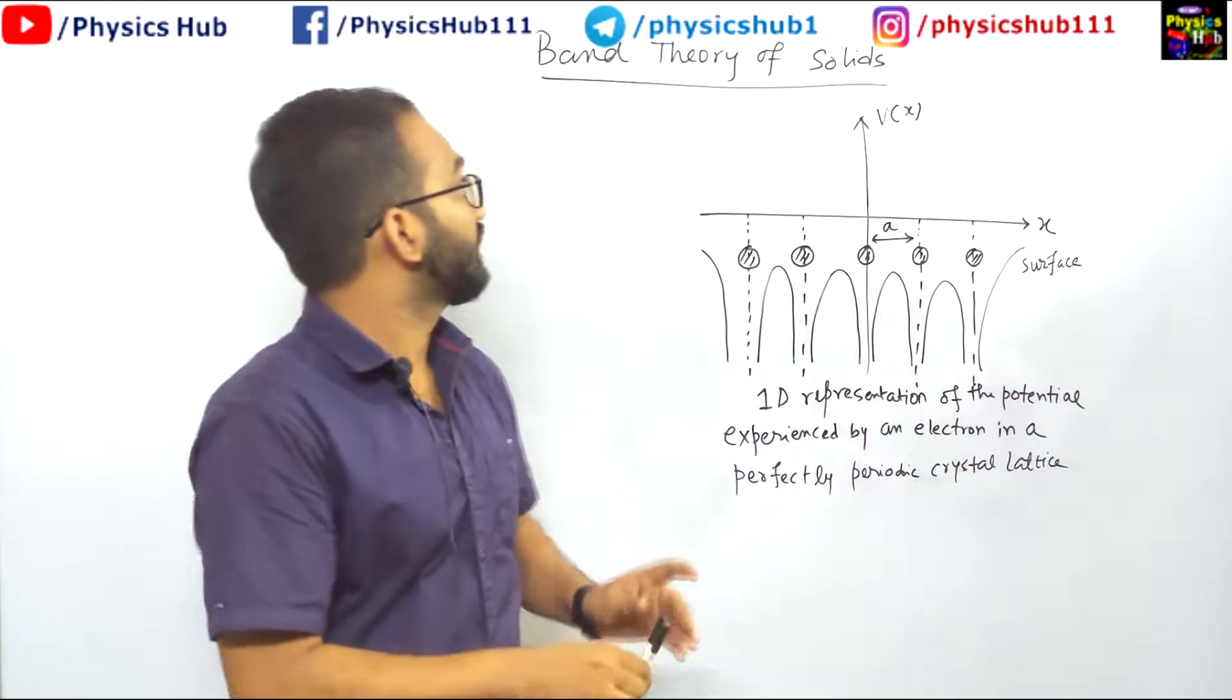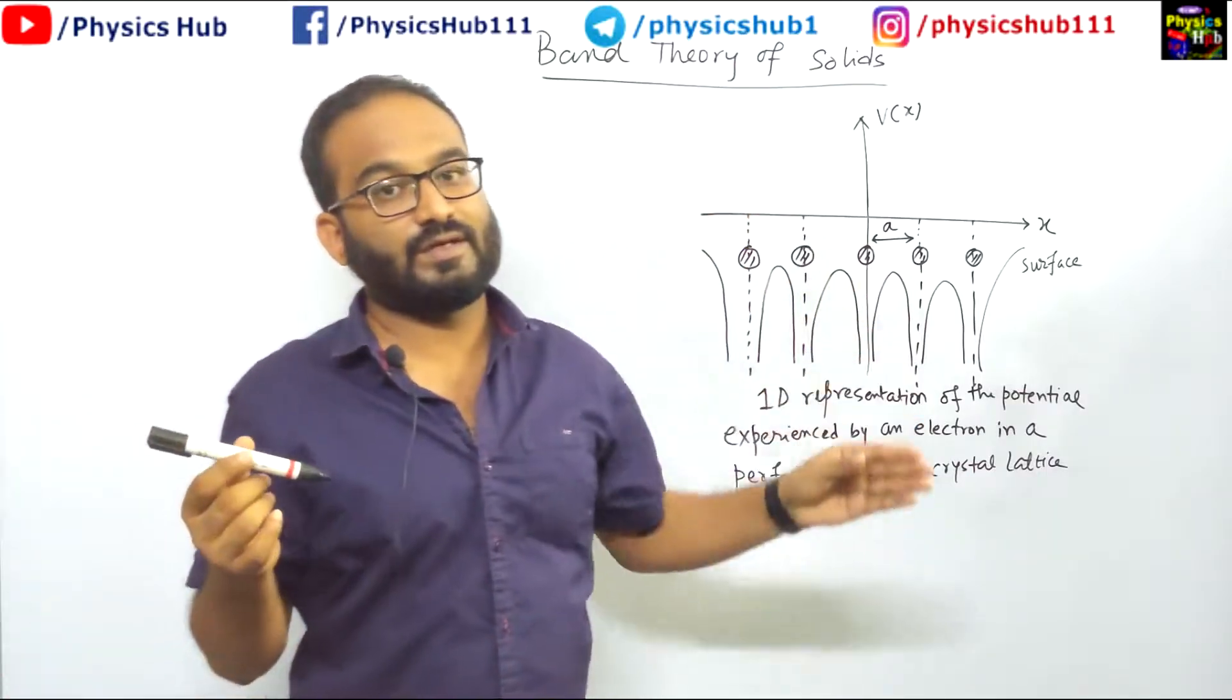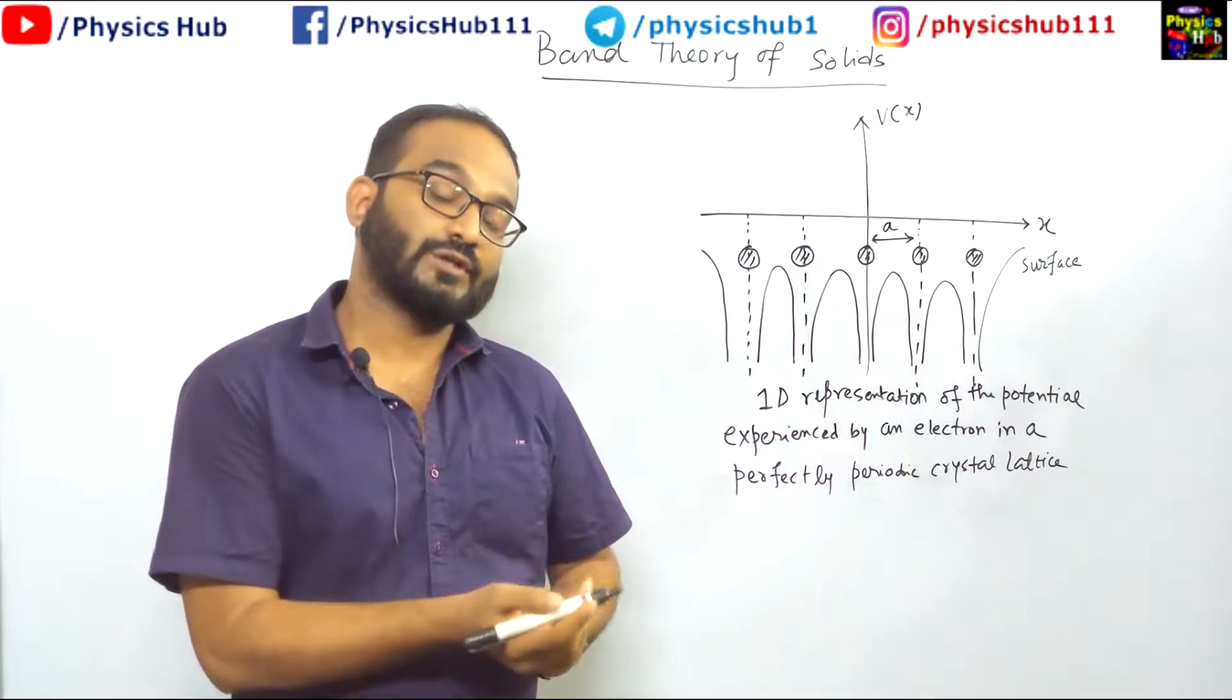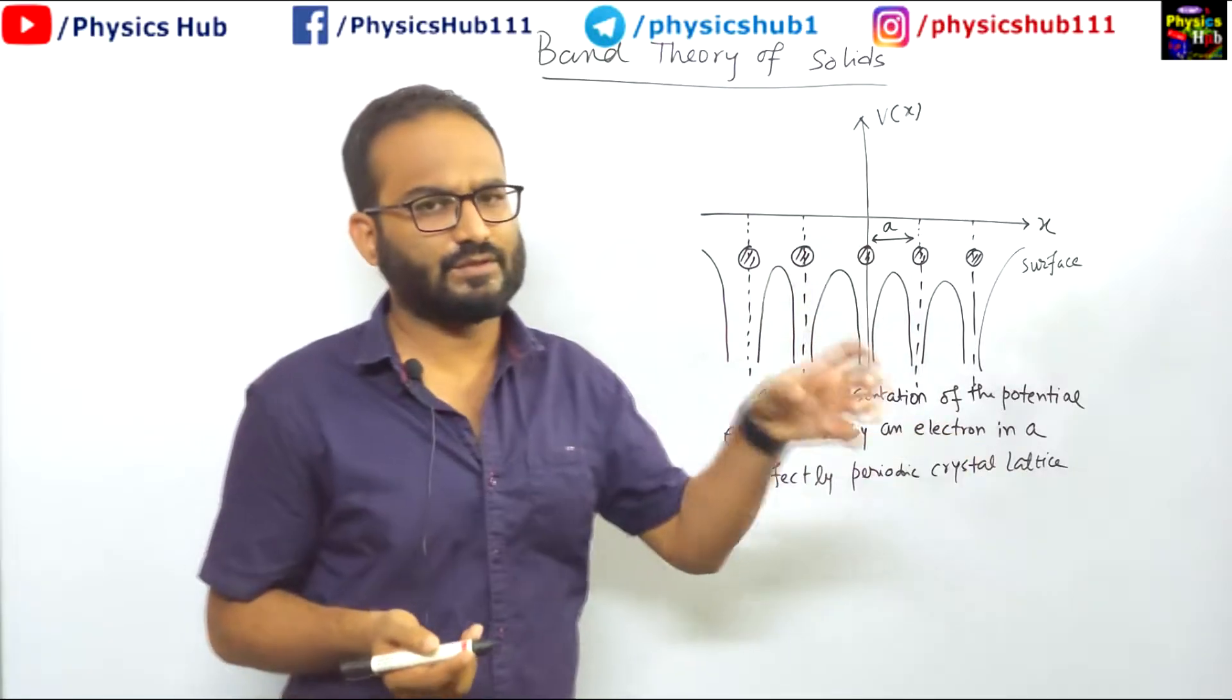Let me briefly tell you the failure of free electron gas theory. Basically it failed because of the oversimplified approximation of the potential experienced by the electron inside a crystal. It was considered to be constant or zero potential.